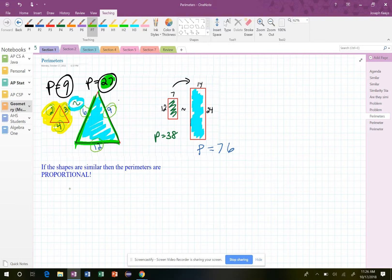Hopefully you can see that every single side, small to small, medium to medium, large to large, all of them have a scale factor of 3.